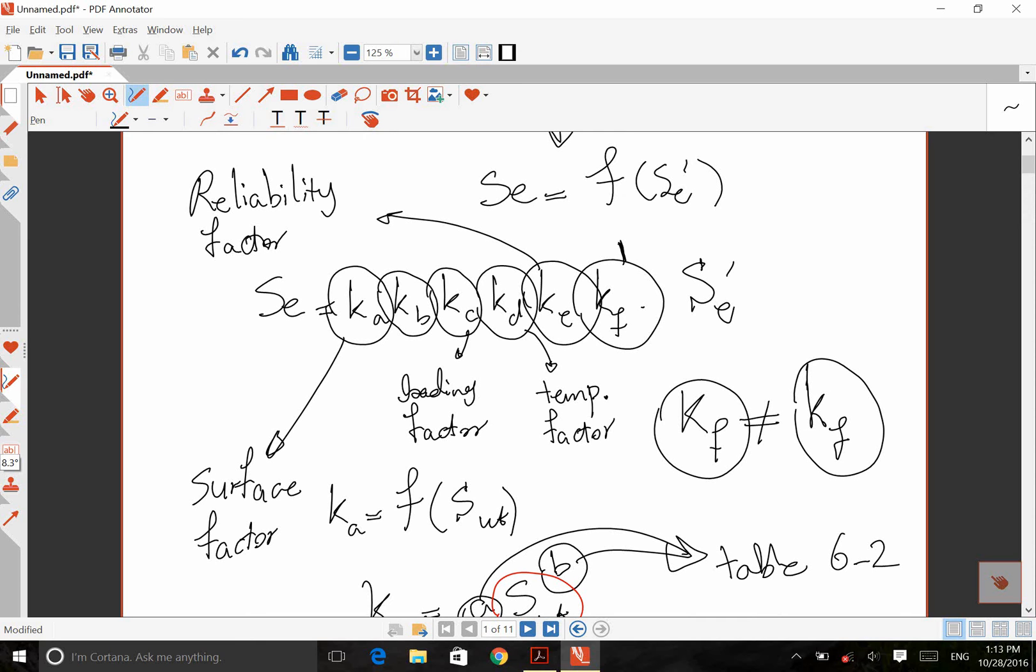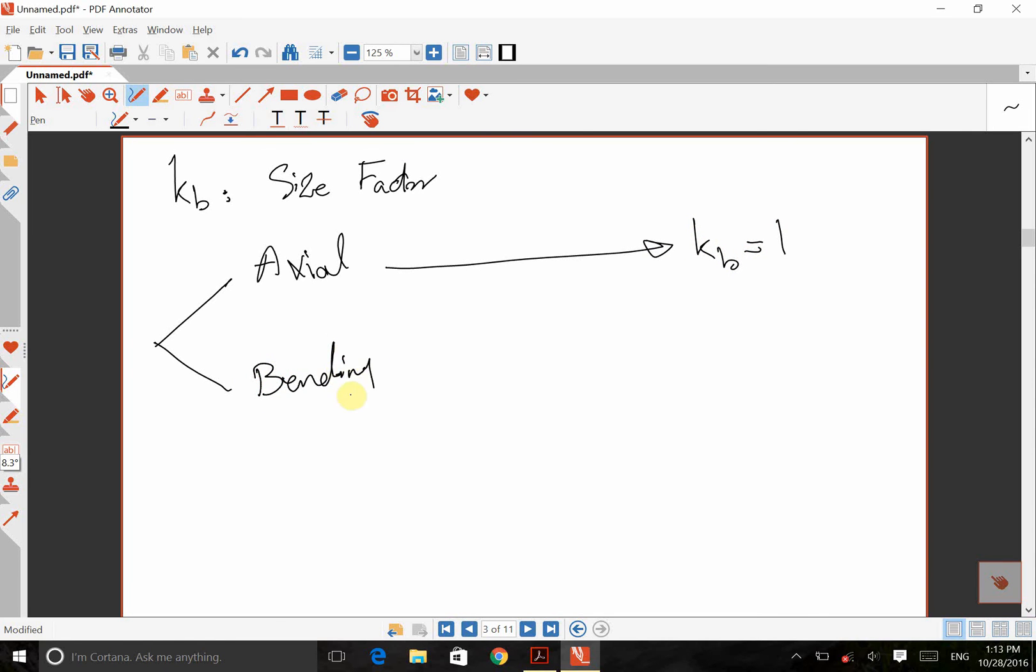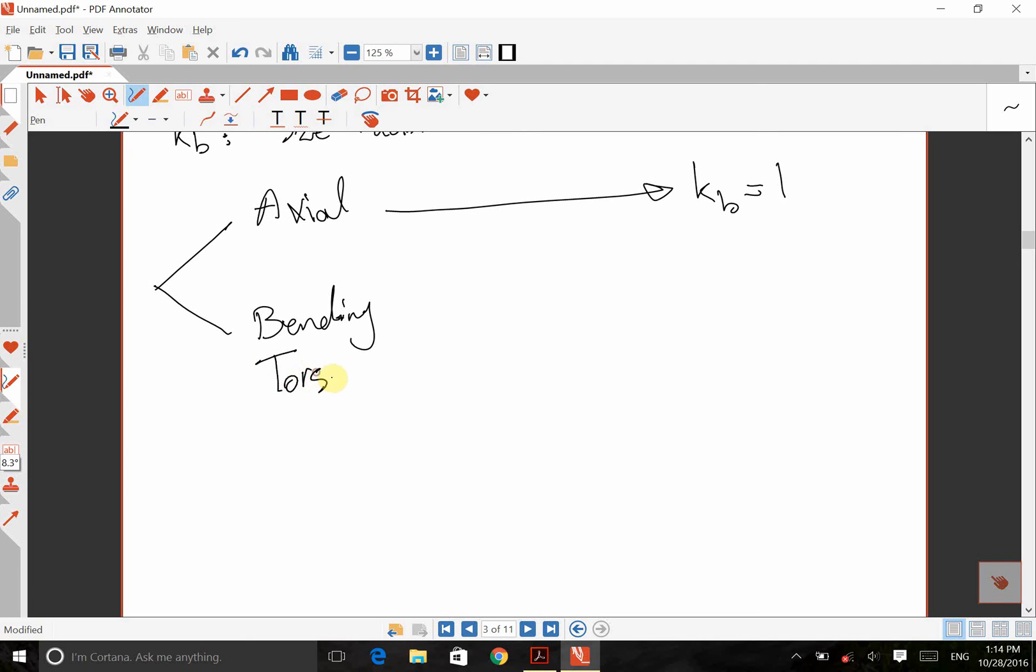So among all these factors, the only one that has not covered yet is KB, this one. KB is size factor and it is a function of geometry, loading and rotational situation of the system. So KB is size factor. Okay. If we have axial loading and the system, KB will be 1. If we have bending or if we have torsion, then we need to look at the geometry of the system.